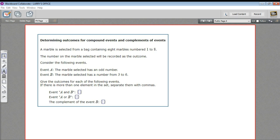So let me show you how this works in this problem. It says a marble is selected from a bag containing eight marbles, numbered one to eight. The number on the marble selected will be recorded as the outcome. Consider the following events. Event A, the marble selected has an odd number. Event B, the marble selected has a number from three to six. Okay, so those are the facts. Bag full of marbles, we have these two events, and then we want to write these events.